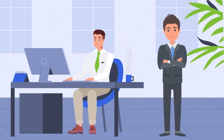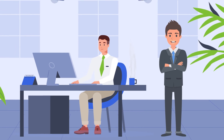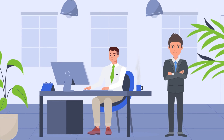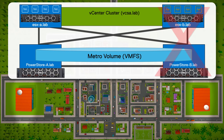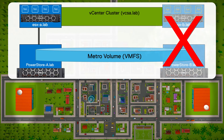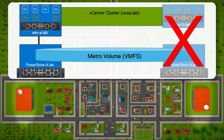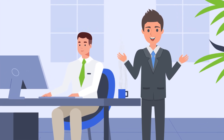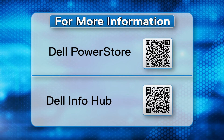The manager agrees, but then wonders what happens if the whole data center — say Site B — is affected. Ready for that question, the admin tells him that in case of a complete site outage, VMware High Availability migrates the VMs to any surviving host. VMware HA completely stops the VMs on the affected hosts and array, finds a host with access to the resources, and restarts the VMs there. The manager thinks that Dell PowerStore Metro Volume is the perfect solution.